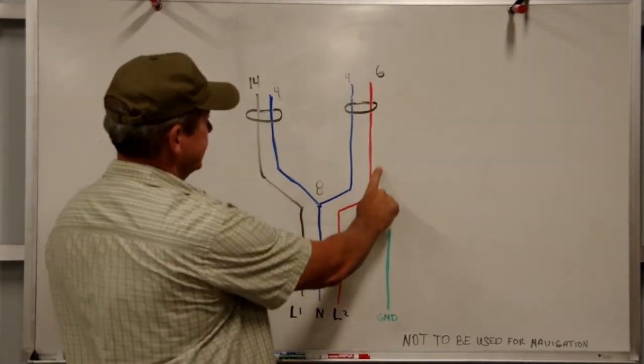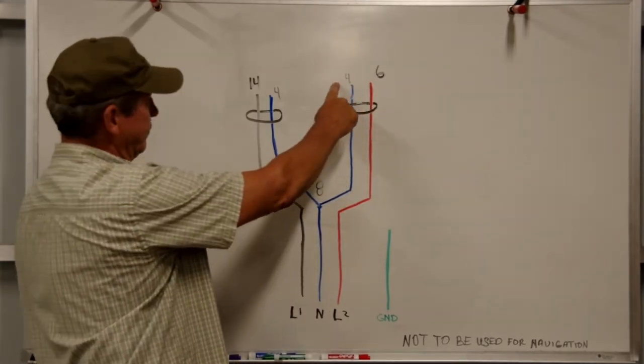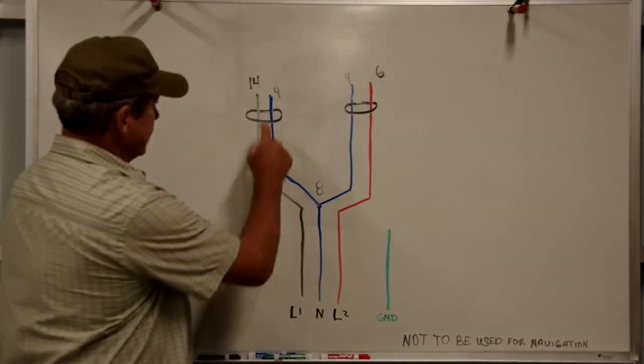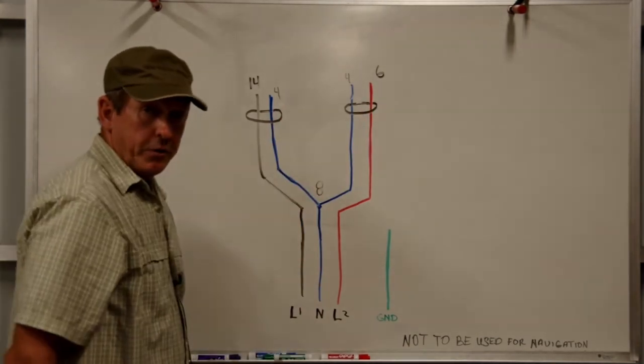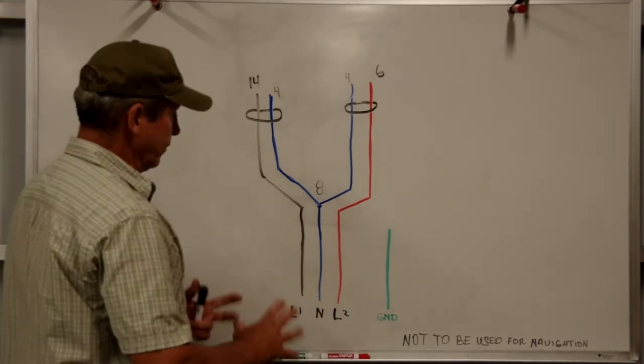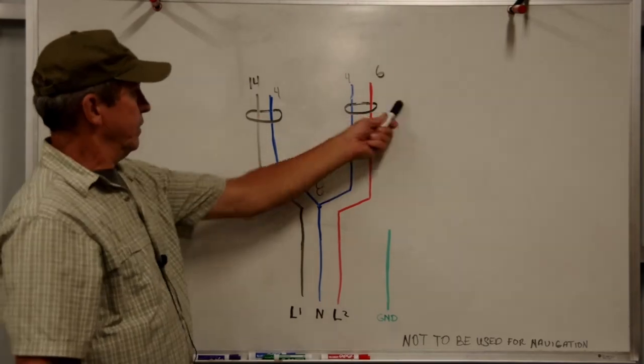Line two, we'll have six coming in, but we only, again, we have four on our neutral and, again, an imbalance. So, these two ground fault breakers will trip. Even though our boat has no fault current on it, we're just creating an imbalance with the splitter.